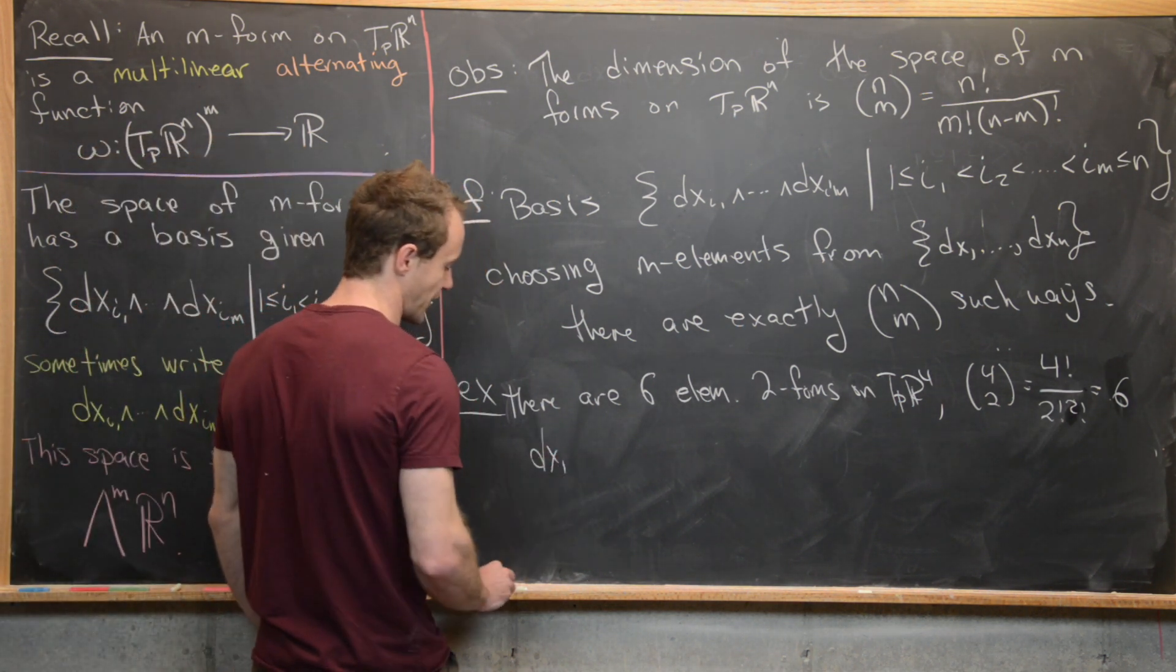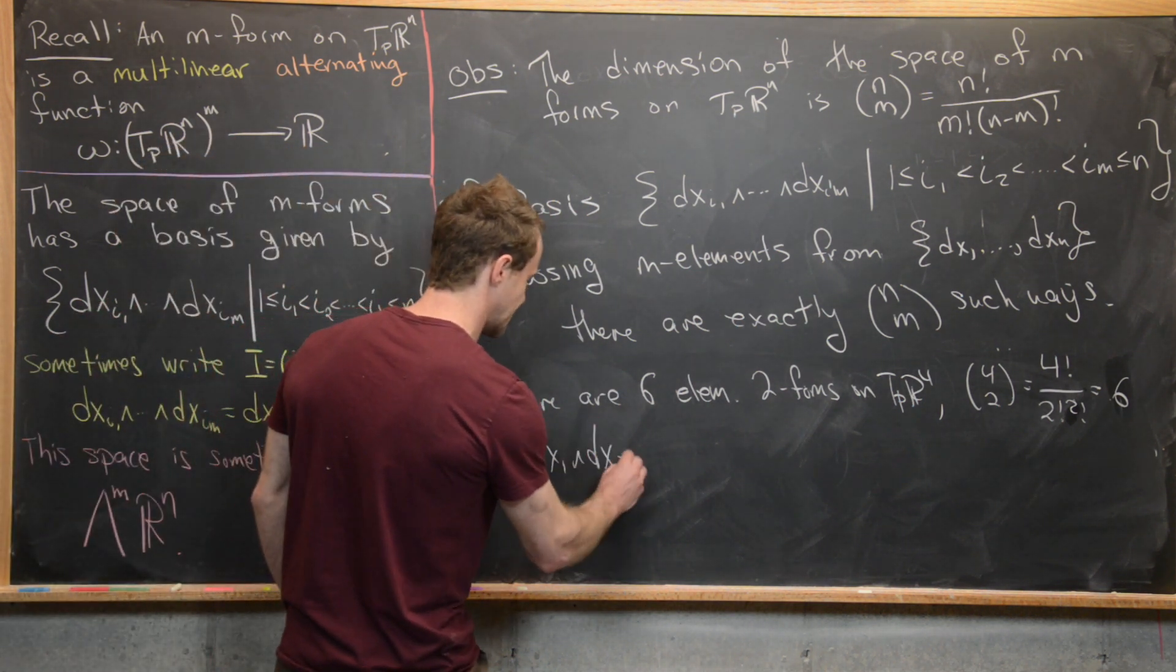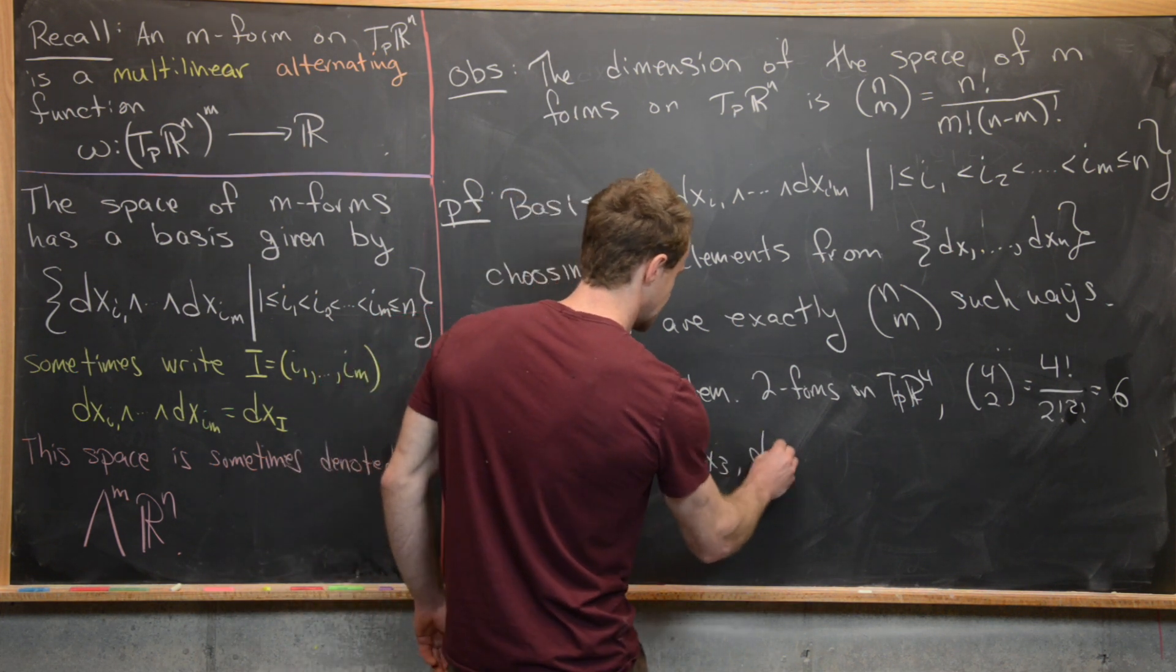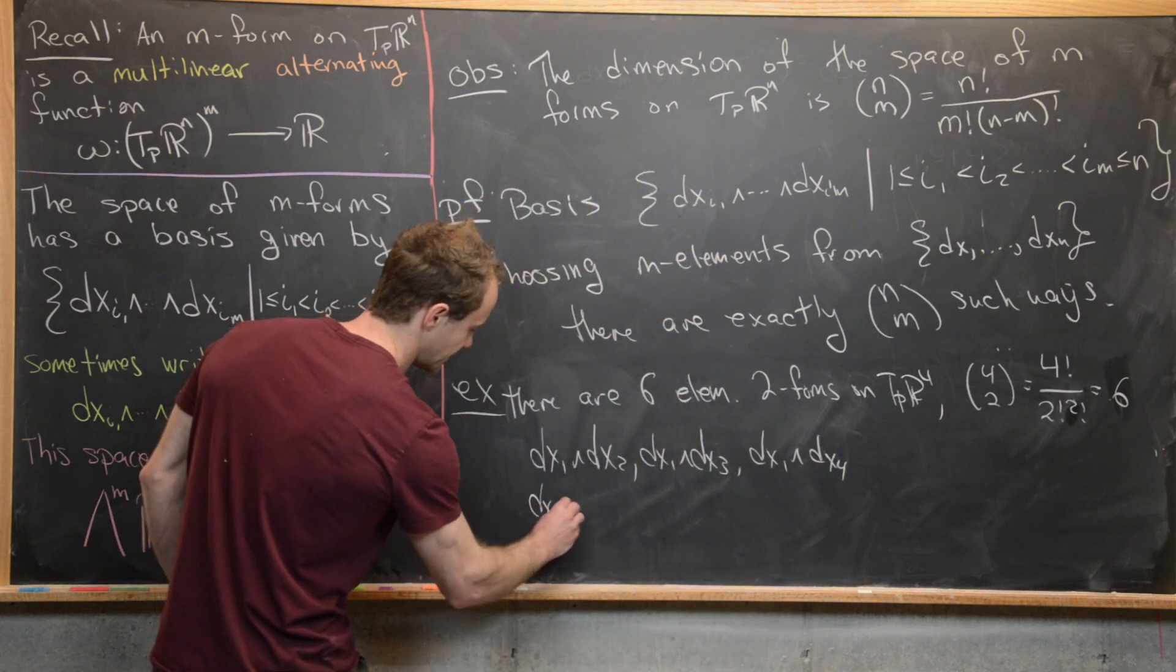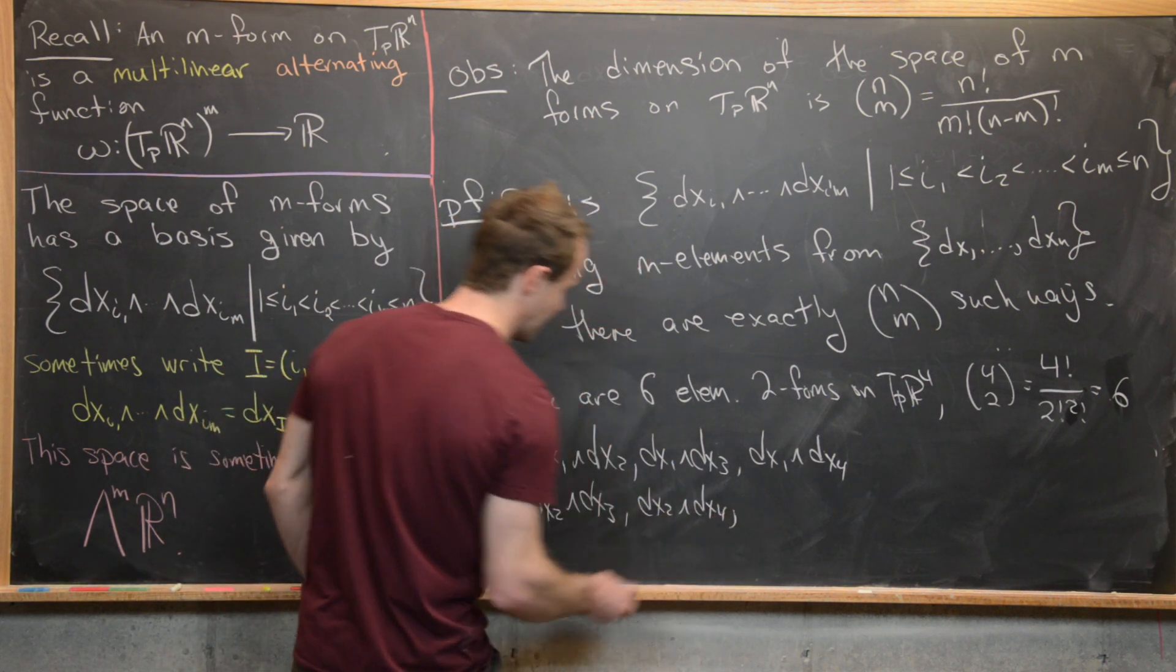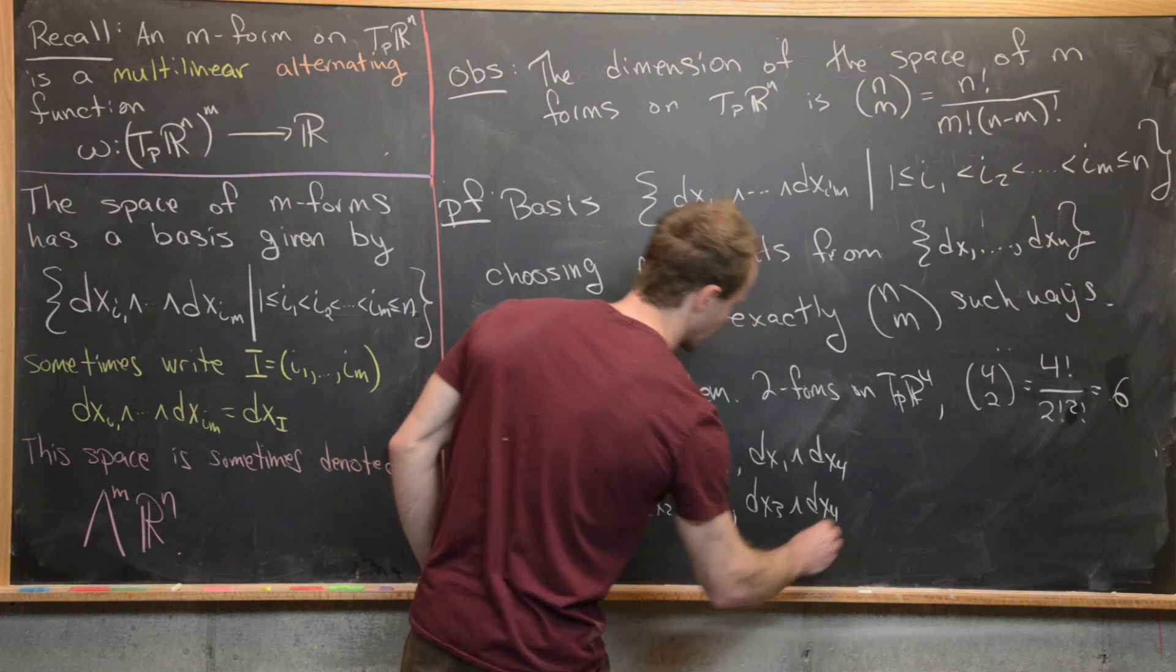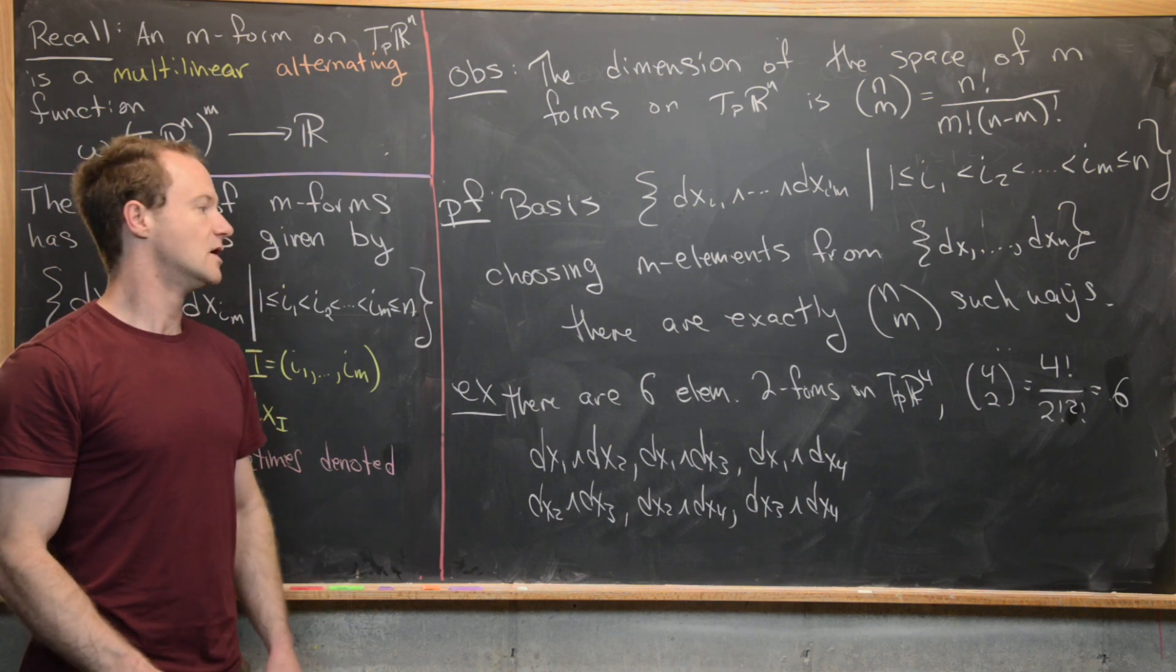So we'll start off with all the ones starting with DX1. So that'll be DX1 wedge DX2, DX1 wedge DX3, DX1 wedge DX4, and then all the ones starting with DX2. So we have DX2 wedge DX3, DX2 wedge DX4, and then finally DX3 wedge DX4. So that'll be all of the 2 forms on TPR^4.